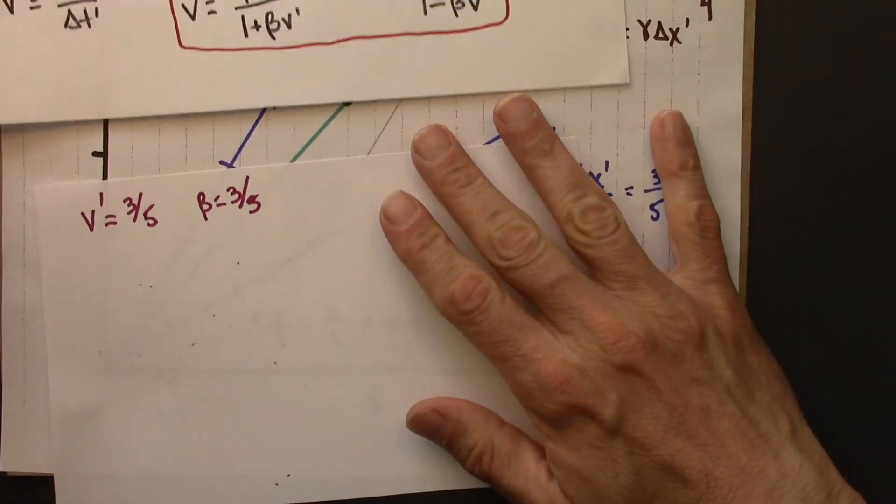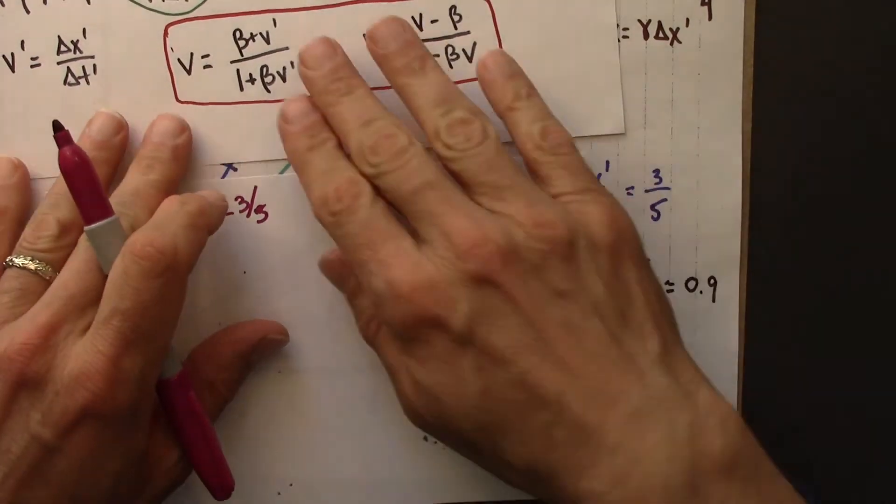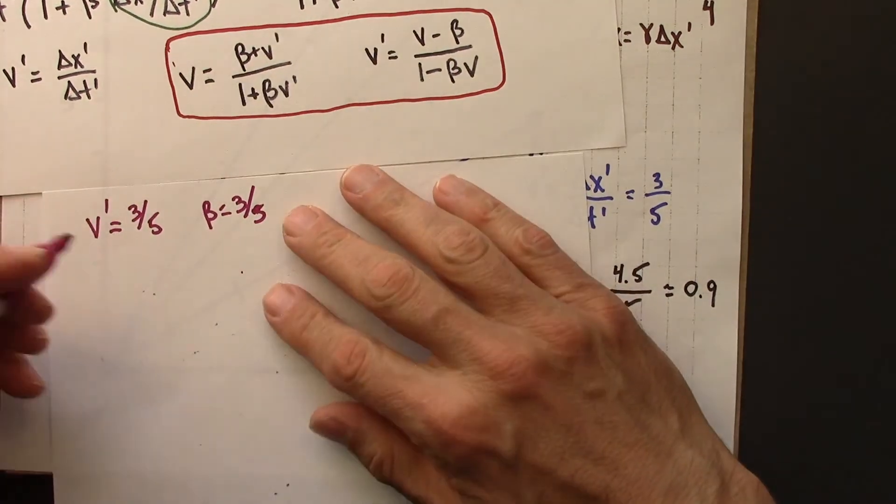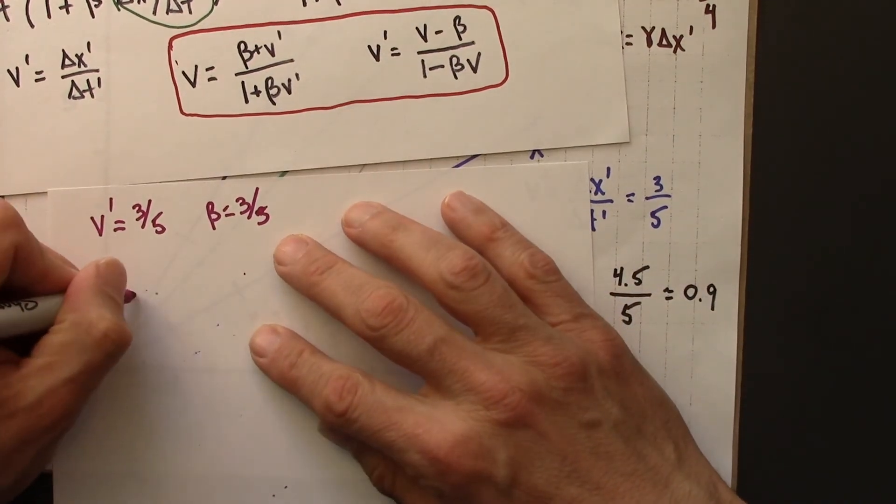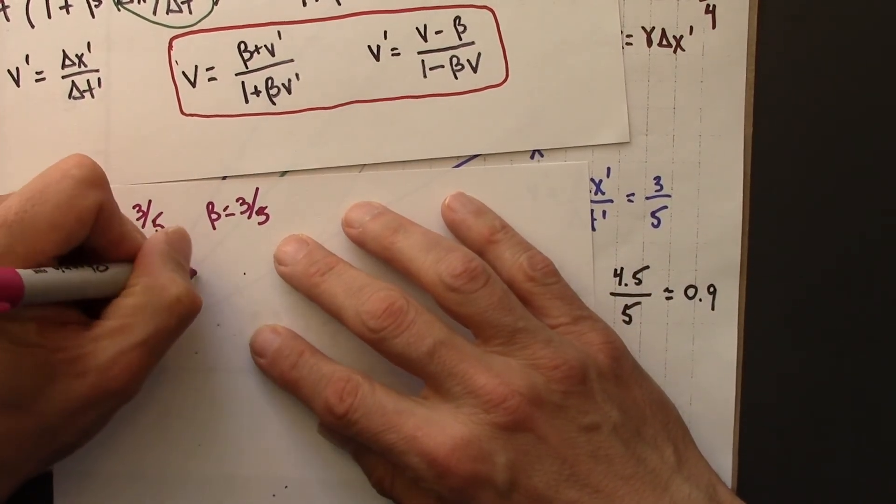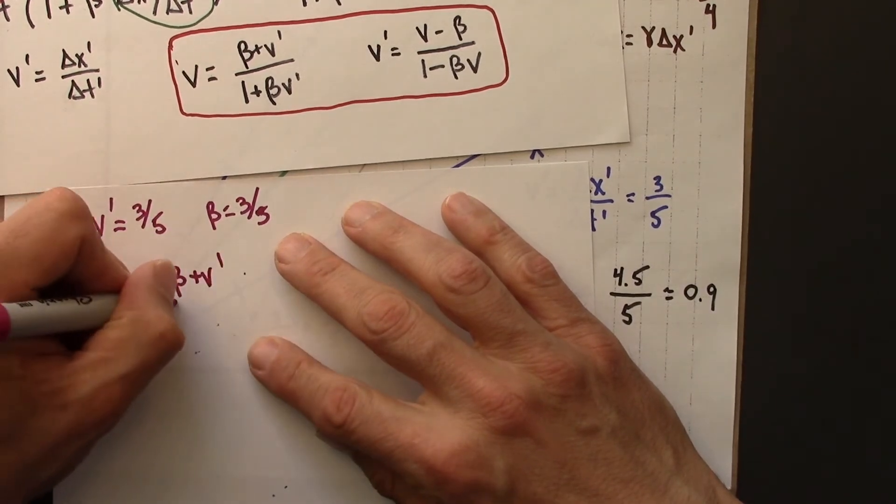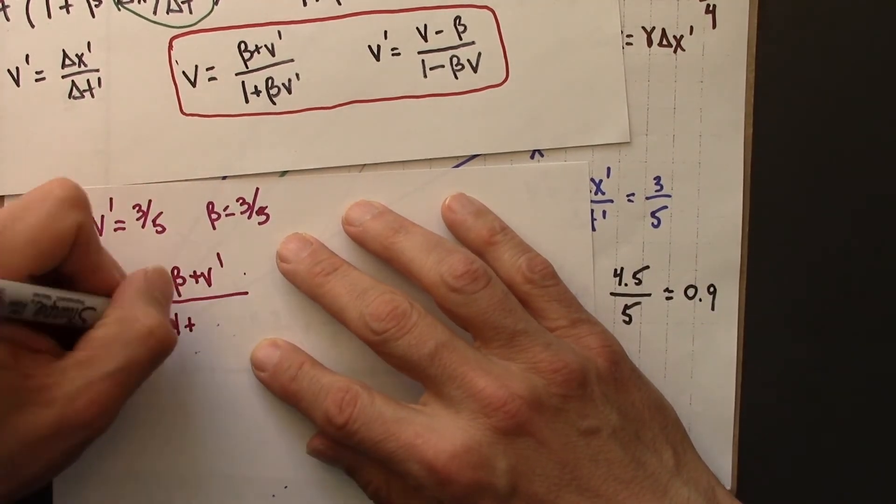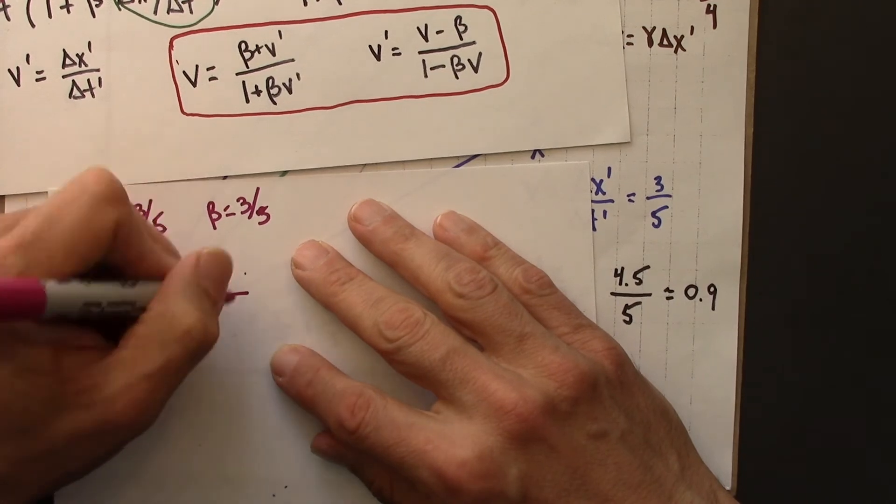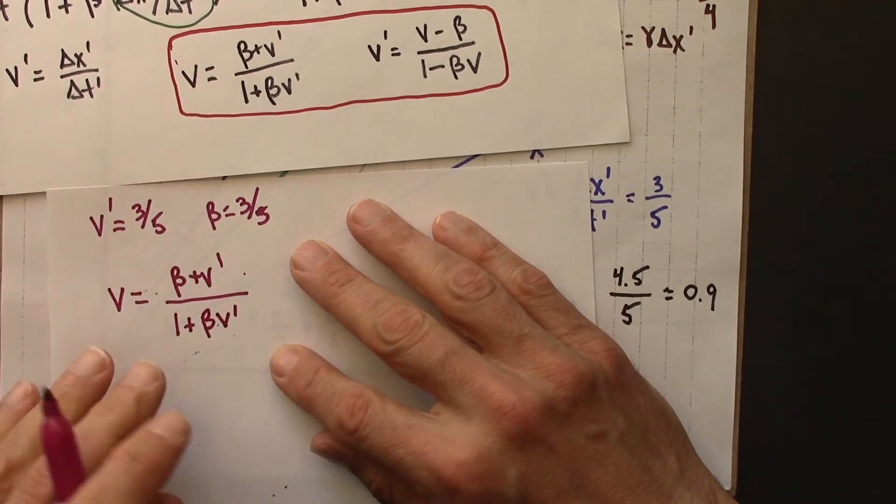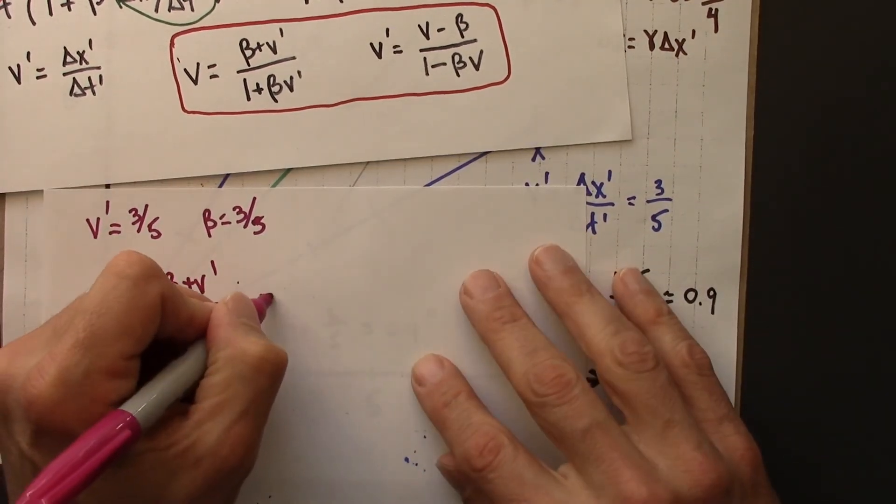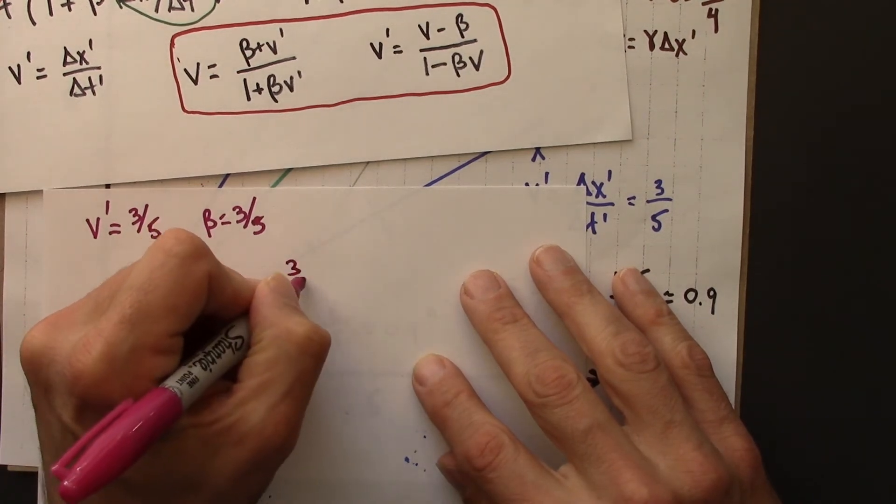Alright, so let's use the Lorentz transformation, or the velocity transformation, to figure out v. So v is beta plus v primed over 1 plus beta v primed. Alright, let's see what happens. So I'm just plugging in 3 fifths for everything.